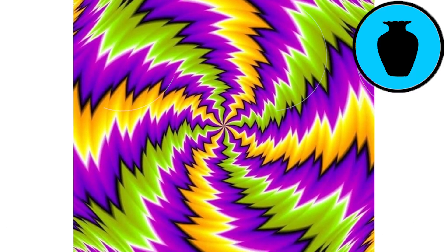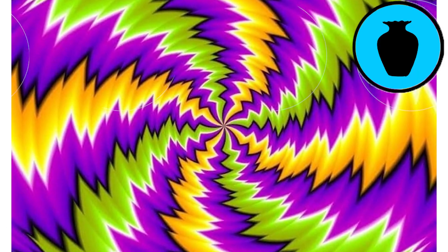Ruben's vase. The Ruben's vase illusion, also known as the figure-figure illusion, is one of the most famous visual illusions. It was first described by the Danish psychologist Edgar Ruben in 1915.